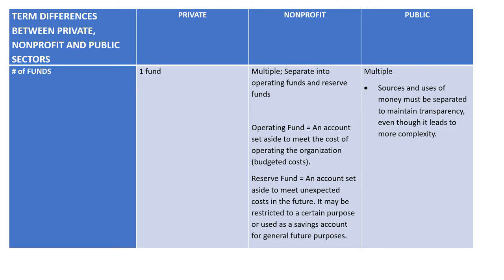We also talked about the number of funds. In the private sector they're not really using fund accounting — they have one fund, one bottom line. In the not-for-profit sector they have multiple funds, often separated into operating funds and reserve funds. An operating fund is for the operating budget, while reserves are for unexpected costs. The public sector also uses this kind of fund accounting with multiple funds.